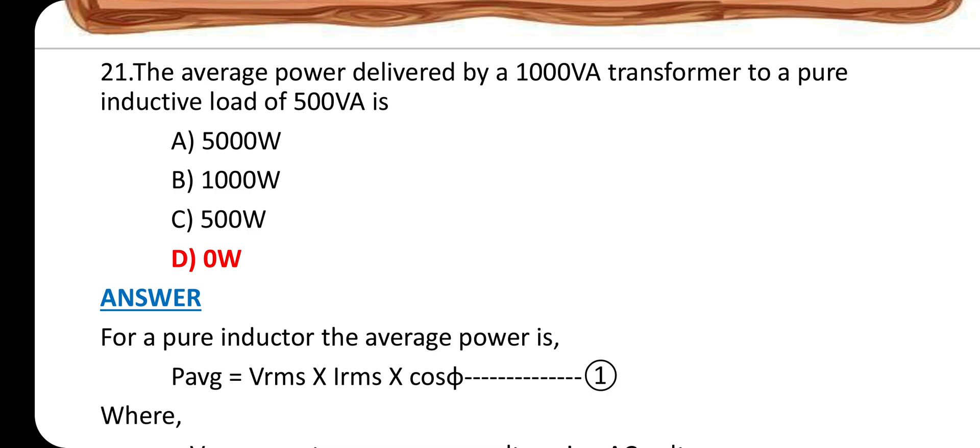Question number 21: The average power delivered by a 1000 volt-ampere transformer to a pure inductive load of 500 volt-ampere is? Answer is option D: 0 watt.